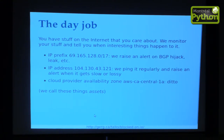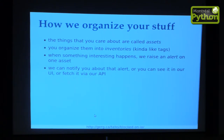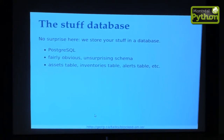All of this stuff you have on the internet that you care about is characterized as assets. You can organize your assets into inventories. When something interesting happens to one of your assets — whether it's a BGP hijack, high ping latency, or packet loss to AWS in Montreal going through the roof — we'll raise an alert and tell you about it. You can fetch that alert through an API, view it in the user interface, receive email, or get a notification on PagerDuty or Slack. We store everything in a relational database with Postgres.